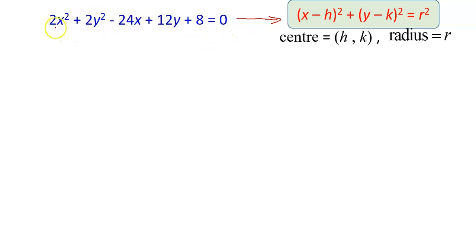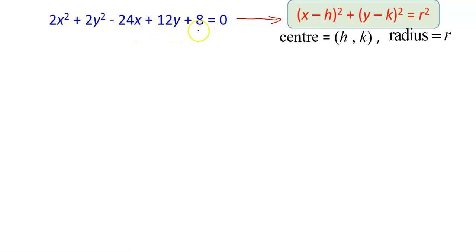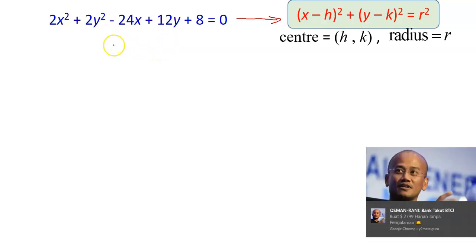First of all, I'm going to make sure the coefficient of the x² and the y² is 1, because we are going to do completing the square. I purposely chose numbers where the coefficients of x², y², xy, and the constant are multiples of 2. So when we divide by 2, there will be no fractions. So I'm going to divide each term by 2.